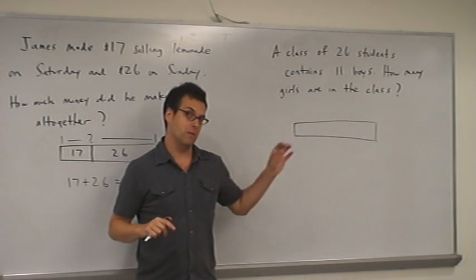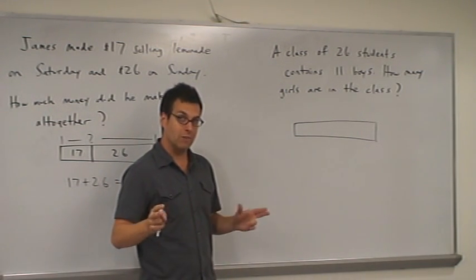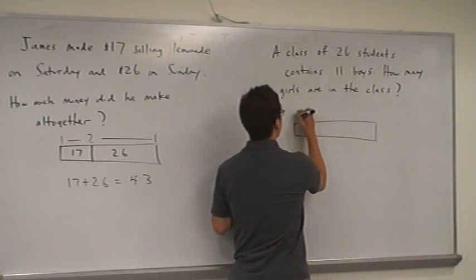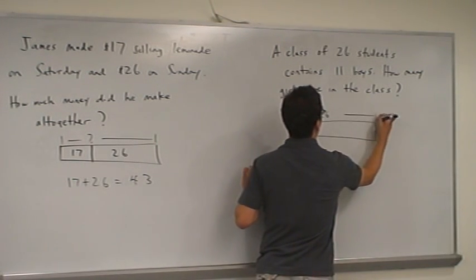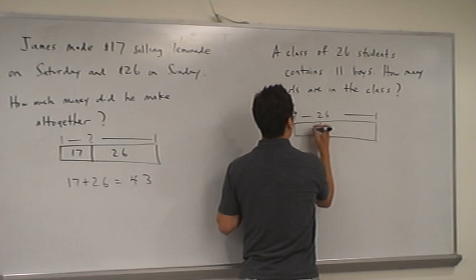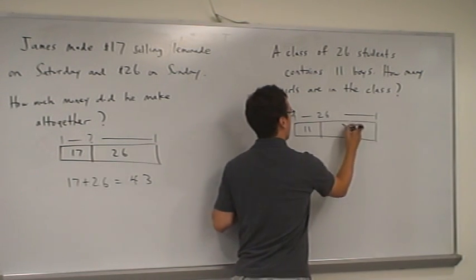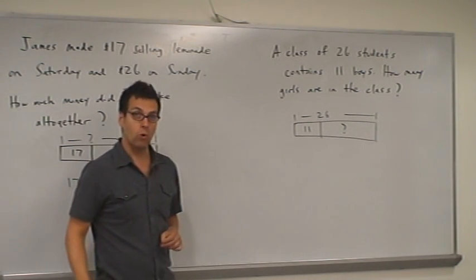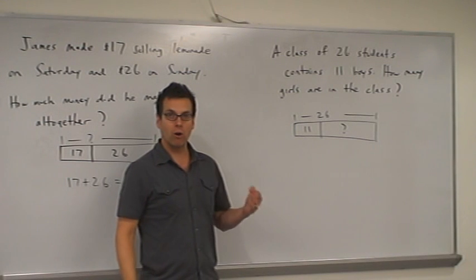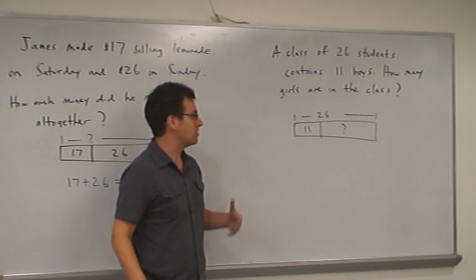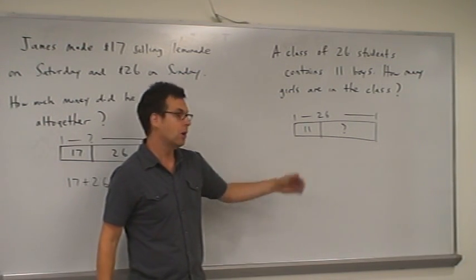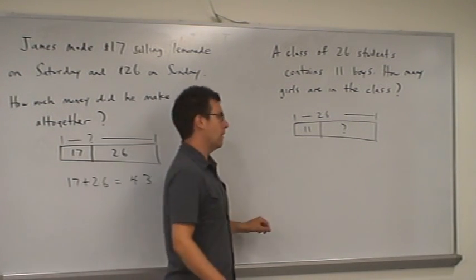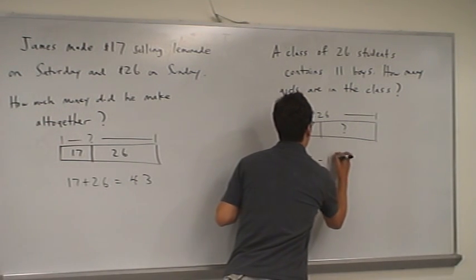the given information is a little bit different. We are given the entire class is 26. We are also given that one part of the class is 11 and we are interested in the other part that makes the whole. We recognize this as part-whole subtraction and hopefully a student that can draw this picture will associate this picture with the arithmetic 26 minus 11.